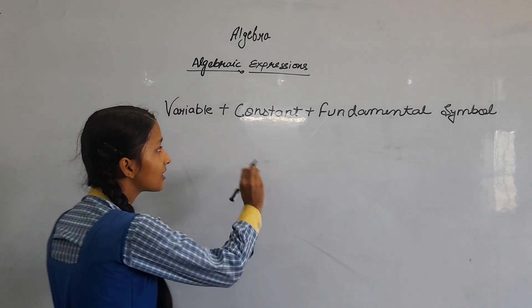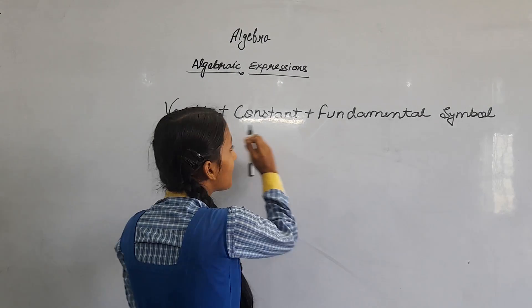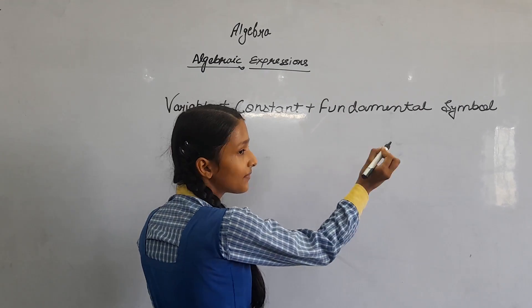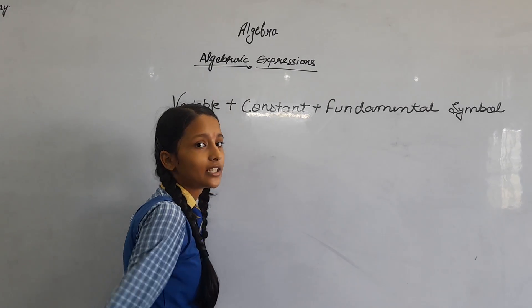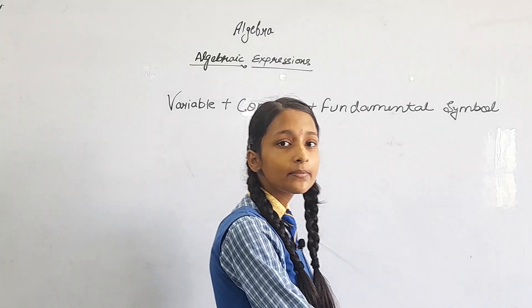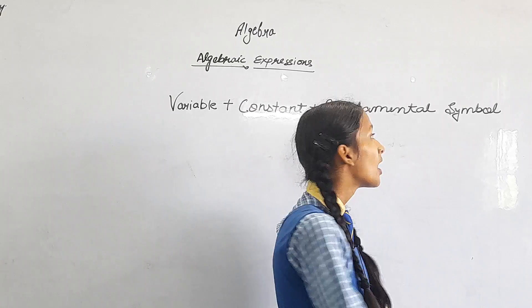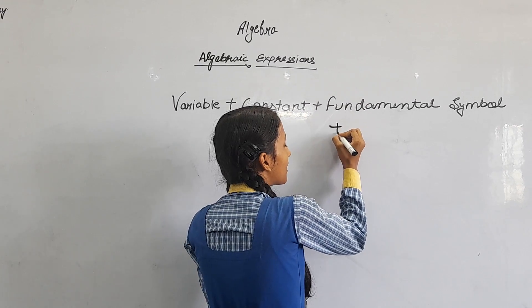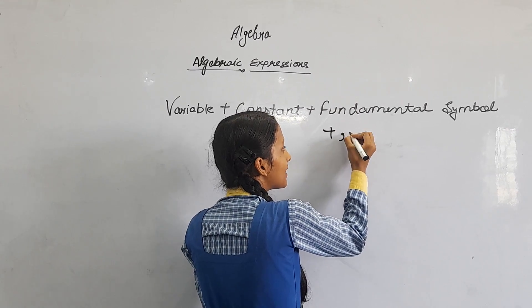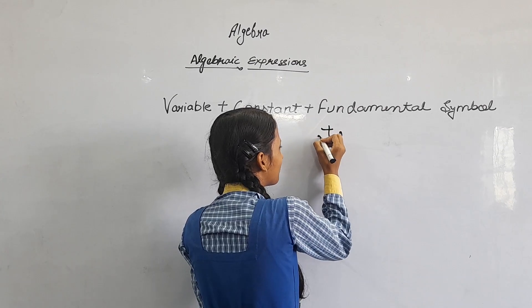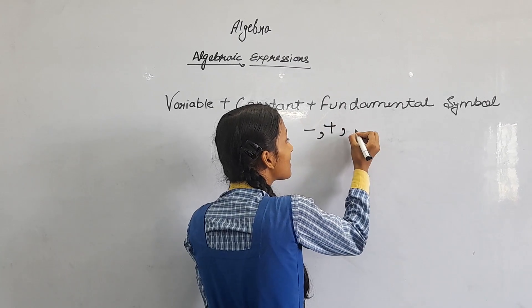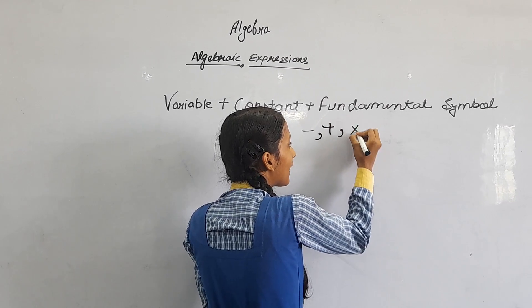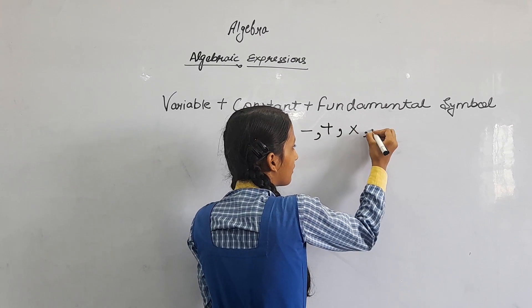There are three terms here: variable, constant, and fundamental symbols. Fundamental symbols are those — there are four types of fundamental symbols: minus, plus, multiply, and divide.